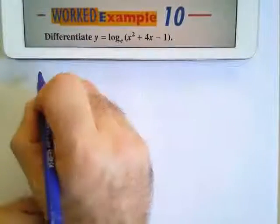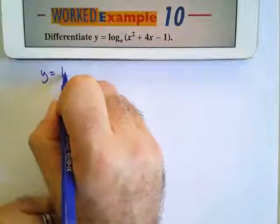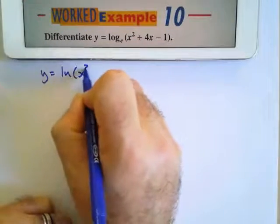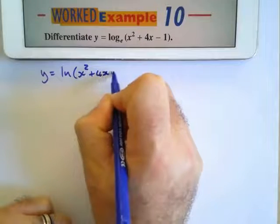Differentiate y equals the natural log of x squared plus 4x minus 1.